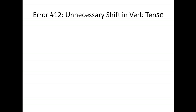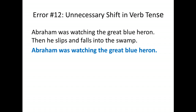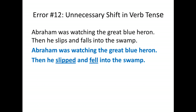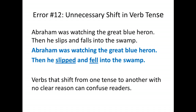Error twelve is unnecessary shifts in verb tense. These often occur when students edit their own work and lose their sense of what tense they were writing in. 'Abraham was watching the great blue heron, then he slips and falls into the swamp' — it should be 'Abraham was watching the great blue heron, then he slipped and fell into the swamp.' 'Was watching' places us in the past, so everything that followed must also remain past tense. Verbs that shift from one tense to another with no clear reason can confuse readers about when things happened in time.